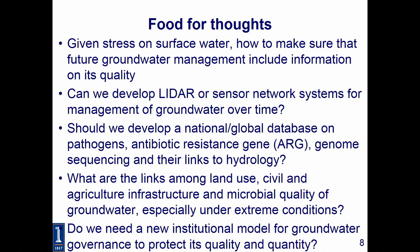I'll end with some food for thought. Given the stress on surface water, how can we ensure that future groundwater management includes information on quality? Can we develop a sensor network or remote sensing system to help manage groundwater quality over time? Should we develop a national and possibly global database on pathogens — including their genomes, antibiotic resistance genes, and sequencing — and more importantly, link that to hydrology? Do we understand the connections among land use, agricultural infrastructure, and microbial quality of groundwater, especially under extreme conditions? And finally, do we need a new model for groundwater governance to protect not only quantity but also quality?